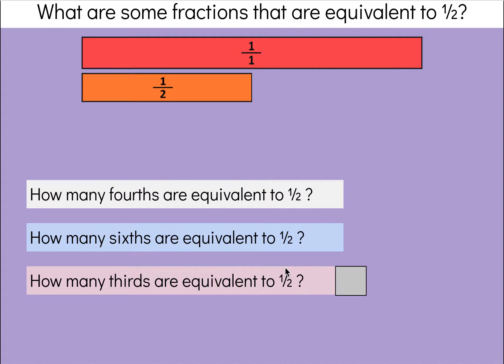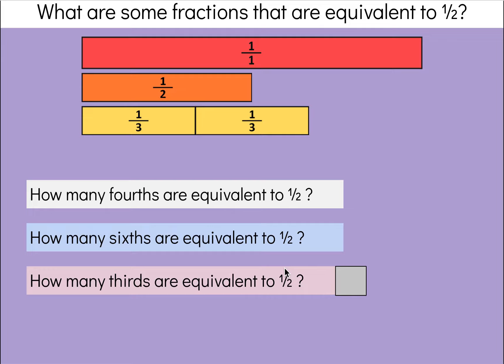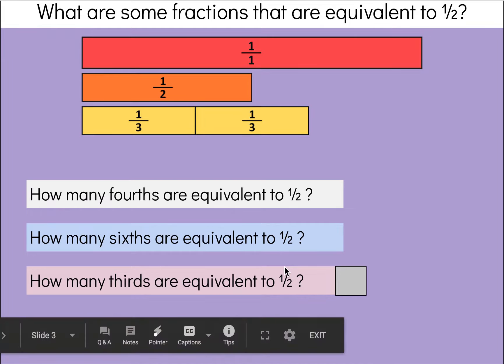And how many thirds are equivalent to one-half? I'm going to get rid of my fourths and my sixths and pull back out the thirds. Here's my third unit fraction. Does it look like if I add another third I'm going to be equivalent to one-half? Nope. If I have two-thirds that's greater than one-half. So there is not a way we can make thirds equivalent to one-half — we say they're not equivalent.